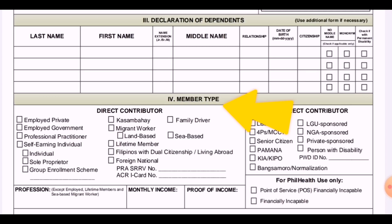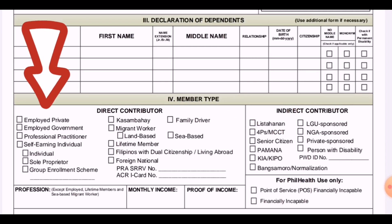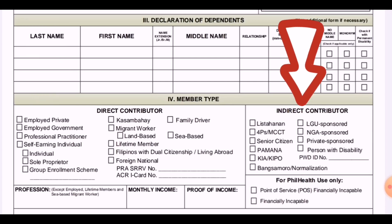Another section is the member type. Check whether you are: employed private, employed government, professional practitioner, self-employed individual, self-proprietorship, kasambahay, family driver, sea-based migrant worker, land-based migrant worker, lifetime member, Filipino with dual citizenship living abroad, or others. There are also indigent contributors such as 4Ps and PWD members.